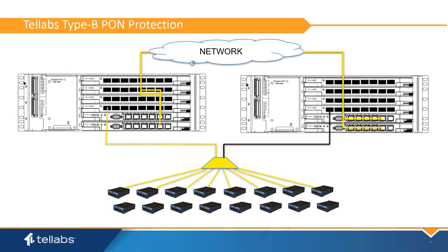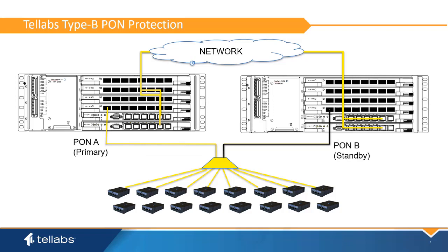Type B protection makes use of a splitter which allows two Pond inputs on the OLT side of the circuit. This pair of Pond interfaces is considered a Pond Protection Group, or PPG, with a primary and secondary interface. During normal operation, a primary Pond port controls and provides connectivity to the ONT group. The standby Pond port listens to the group and becomes the primary when it detects a failure on the Pond port.